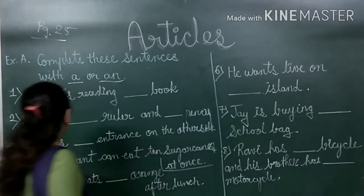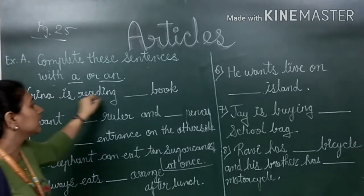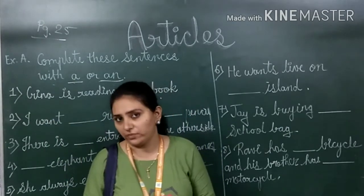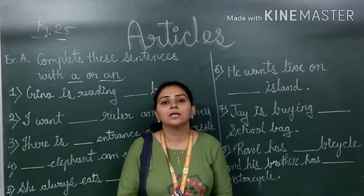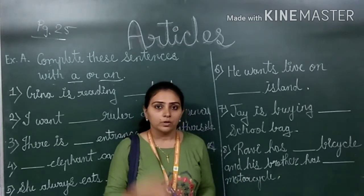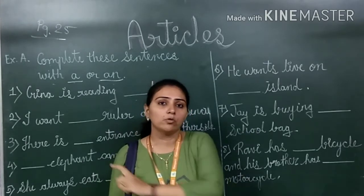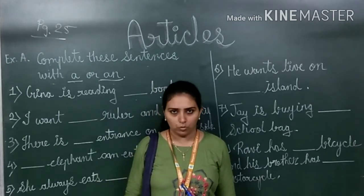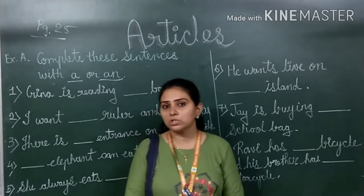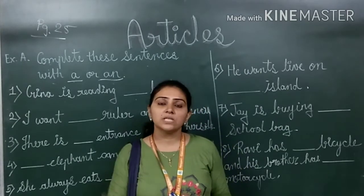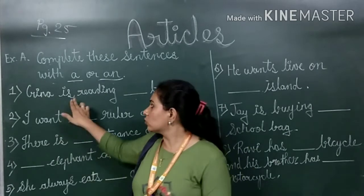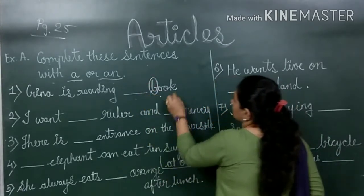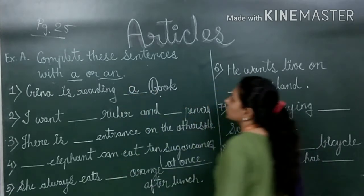The first sentence is: Gina is reading blank book. Before writing the answer, let me remind you we have done two types of articles — definite article and indefinite article. Indefinite articles are used with consonants and vowels. Consonants are all letters from A to Z except A, E, I, O, U, which are the vowels. Indefinite articles are used before a singular noun. So Gina is reading a book — 'book' is a noun and B is a consonant, so the answer is 'a book'.